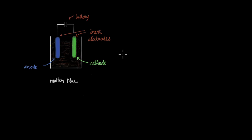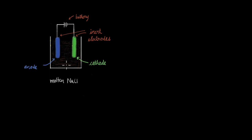Electrolysis of aqueous NaCl is one of the important processes using which NaOH is produced in industries. But before we go to the case of aqueous NaCl, let me quickly recap how electrolysis of molten NaCl takes place. We have seen this type of electrolysis setup before, where we have two electrodes connected to a power source, and the electrolyte here is molten NaCl, which we get when we take some NaCl and heat it until it reaches the molten state.